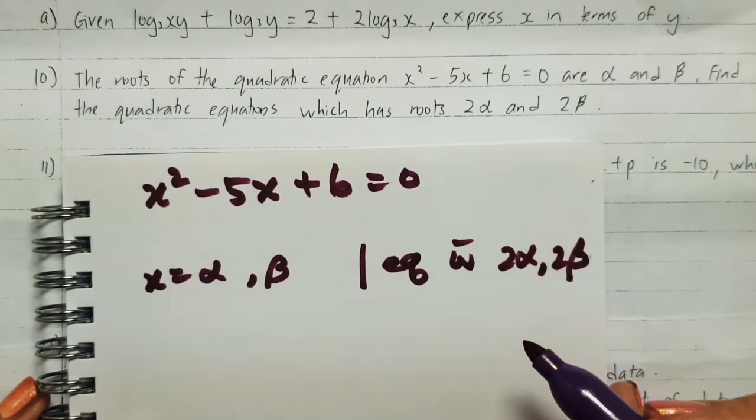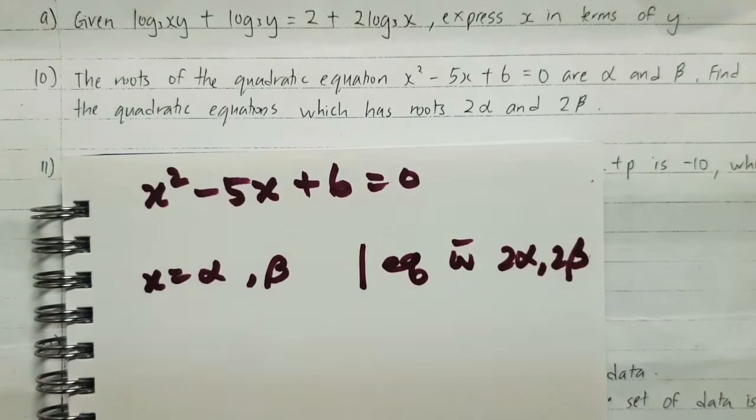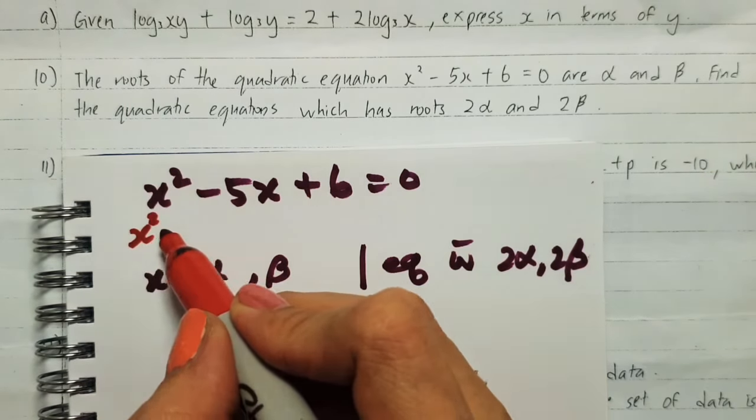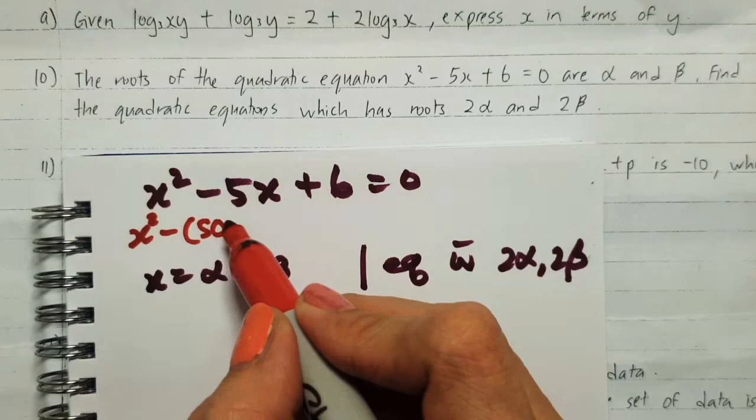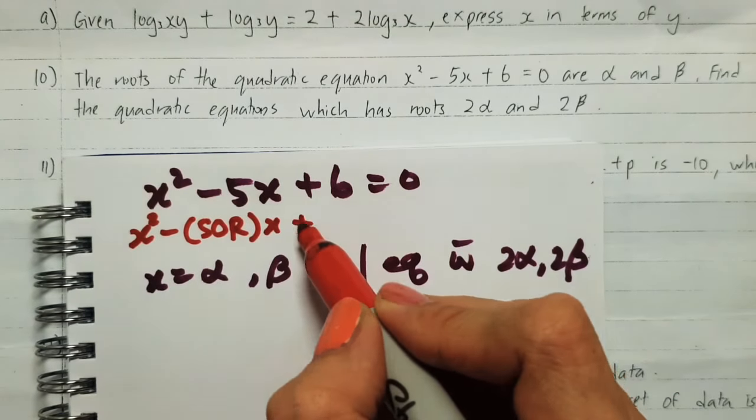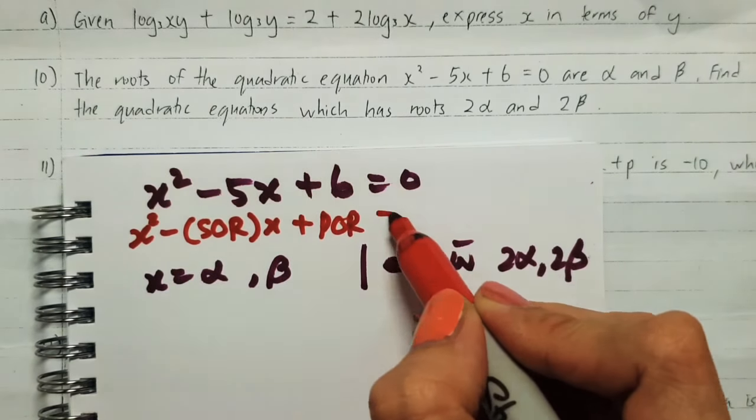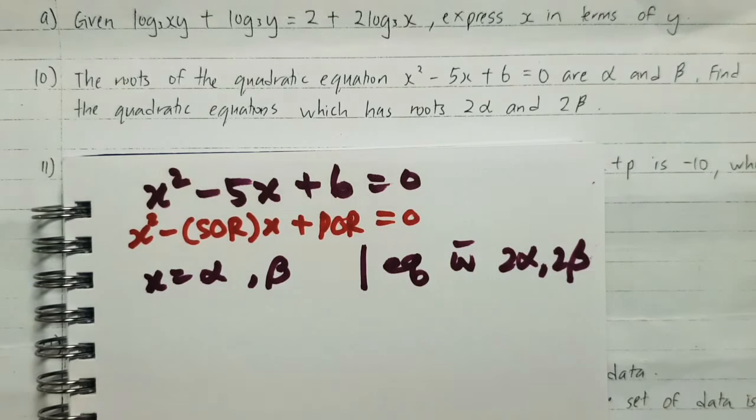So what can we do? We always compare this to the general form: x² - (sum of roots)x + (product of roots) = 0. Compare like this.